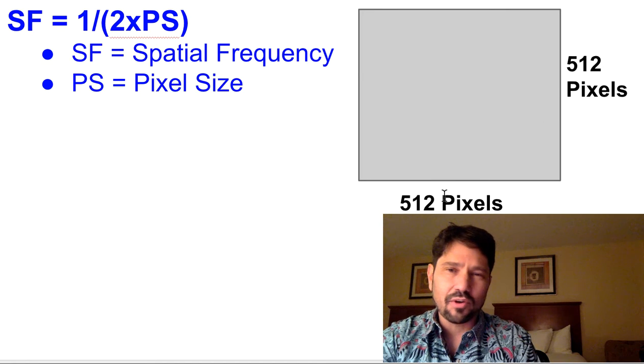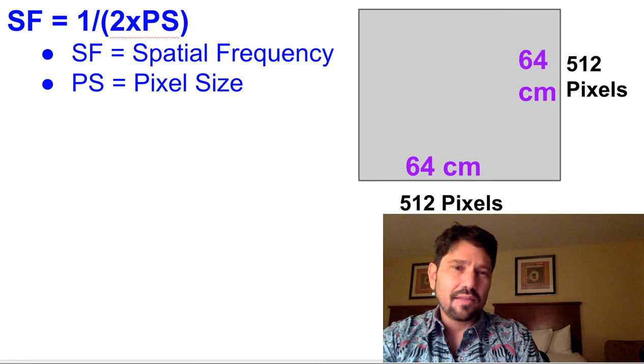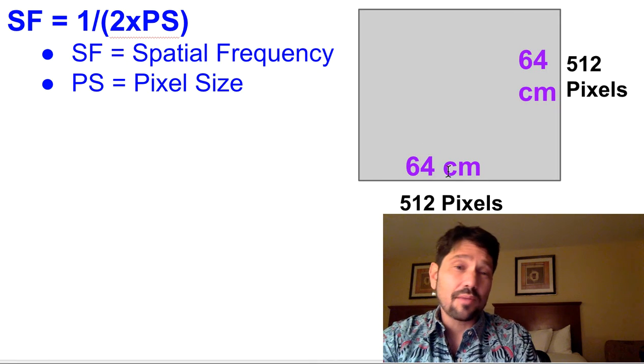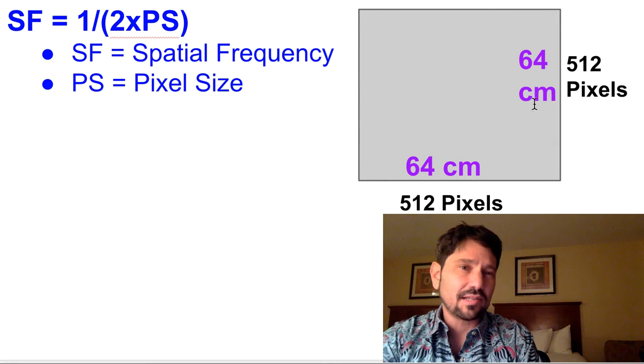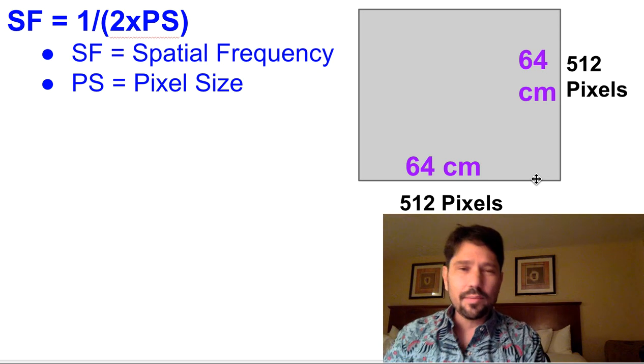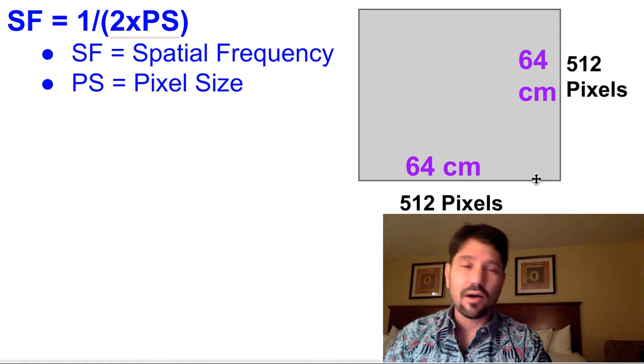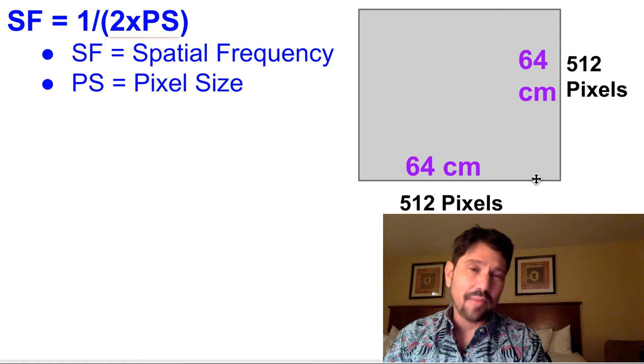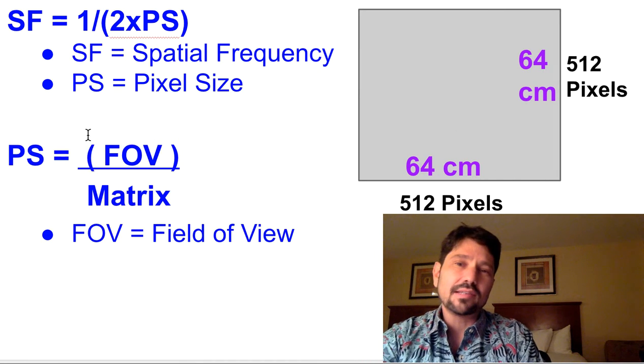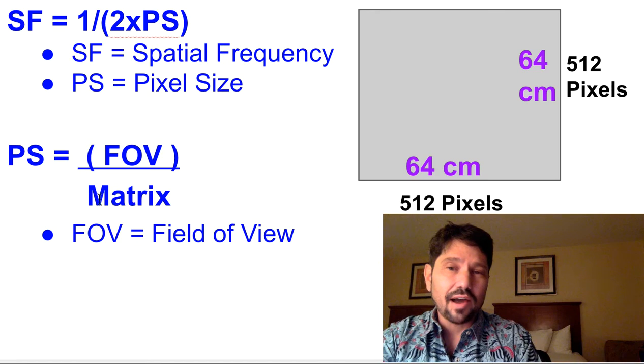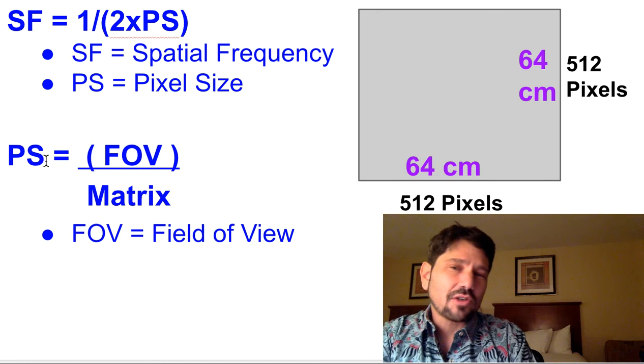So we've got that box, 512 by 512 pixels. So each side is 512 pixels. And the field of view is talking about, well, what is imaged on each side. So we've got an area of 64 centimeters by 64 centimeters imaged onto an array of pixels that are in a matrix of 512 by 512. So our new formula is that the field of view divided by the matrix will give us our pixel size.